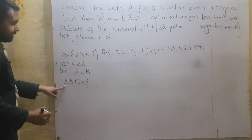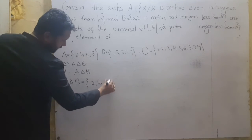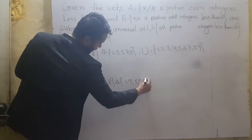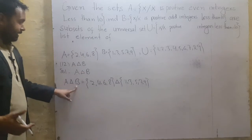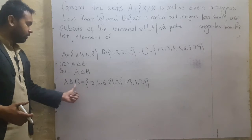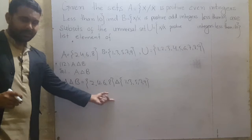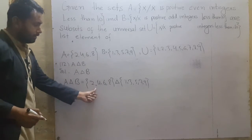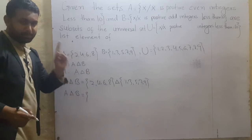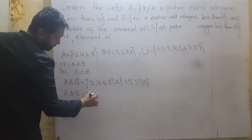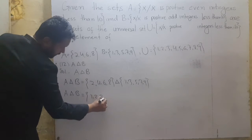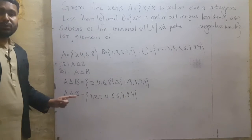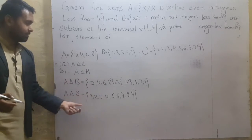A symmetric difference B: set A has elements {2, 4, 6, 8} and set B has elements {1, 3, 5, 7, 9}. A symmetric difference B equals {1, 2, 3, 4, 5, 6, 7, 8, 9} because we minus the common elements — no element is common — so we write both sets together.